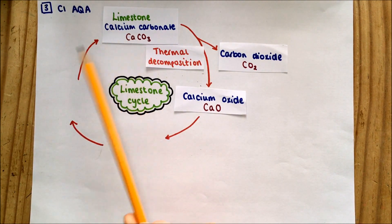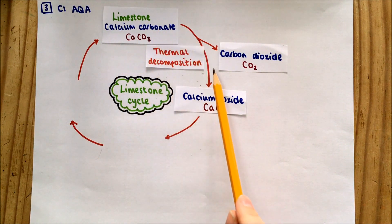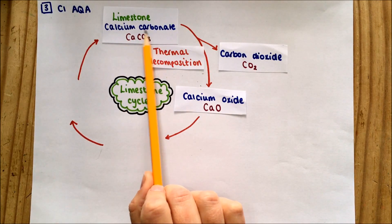You might have done this in school with a limestone chip on the corner of a gauze, heated it with the Bunsen burner, and broken it down into carbon dioxide and calcium oxide.